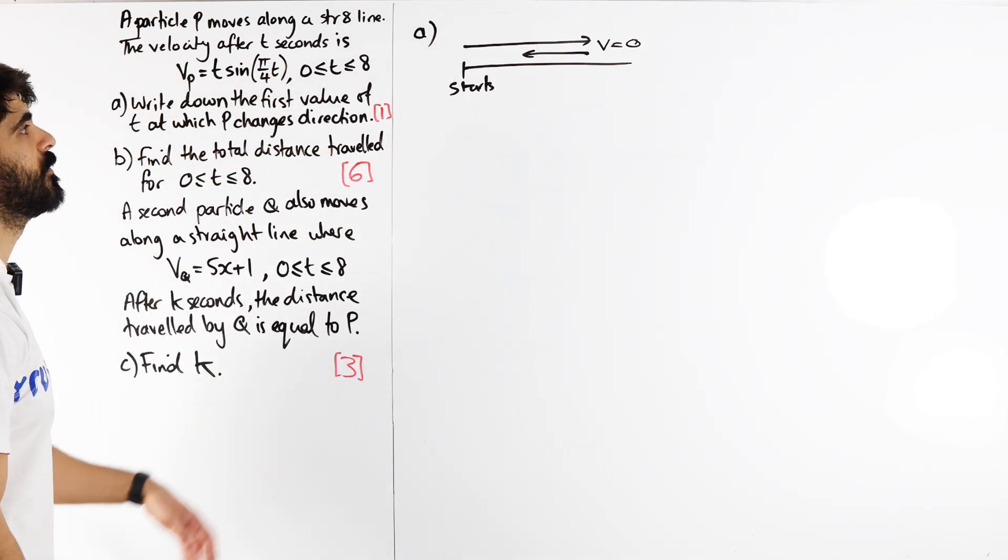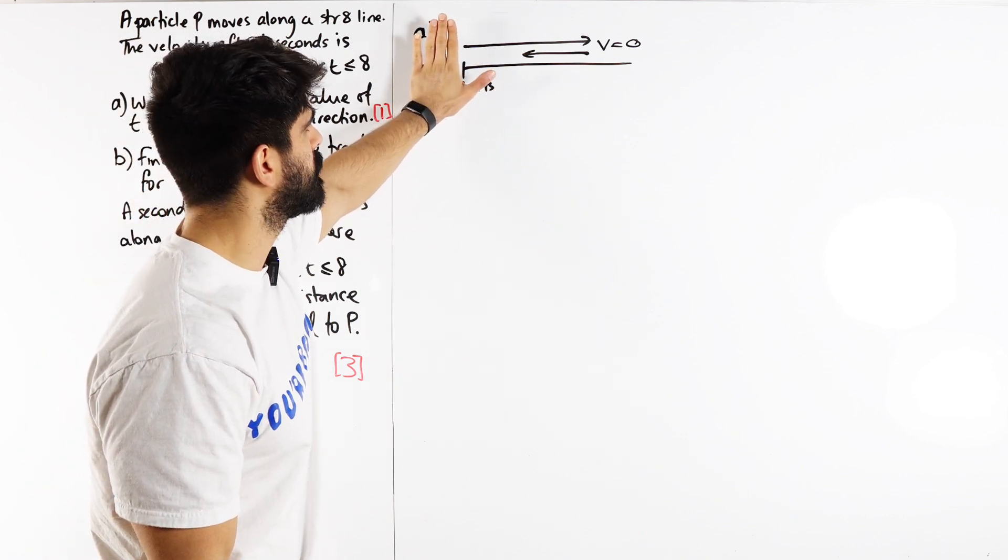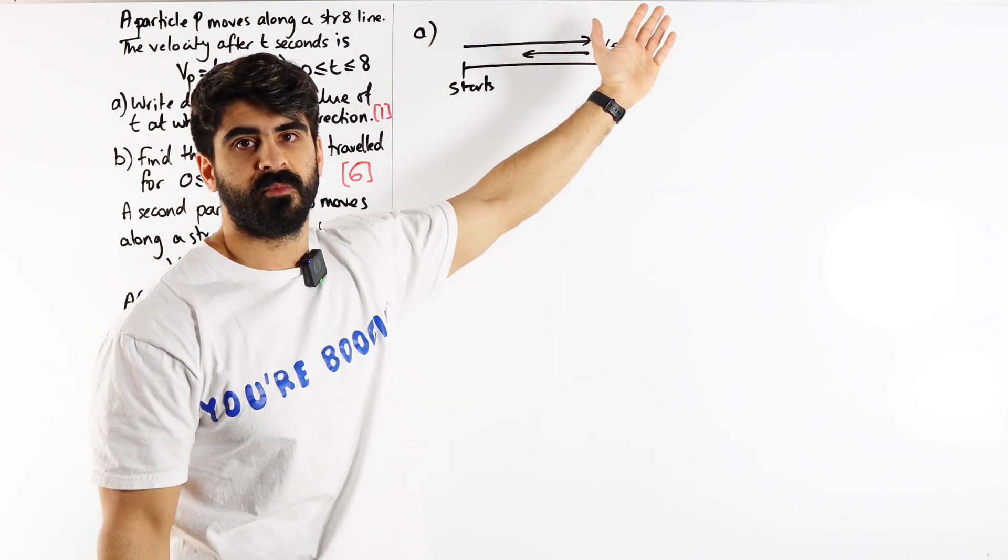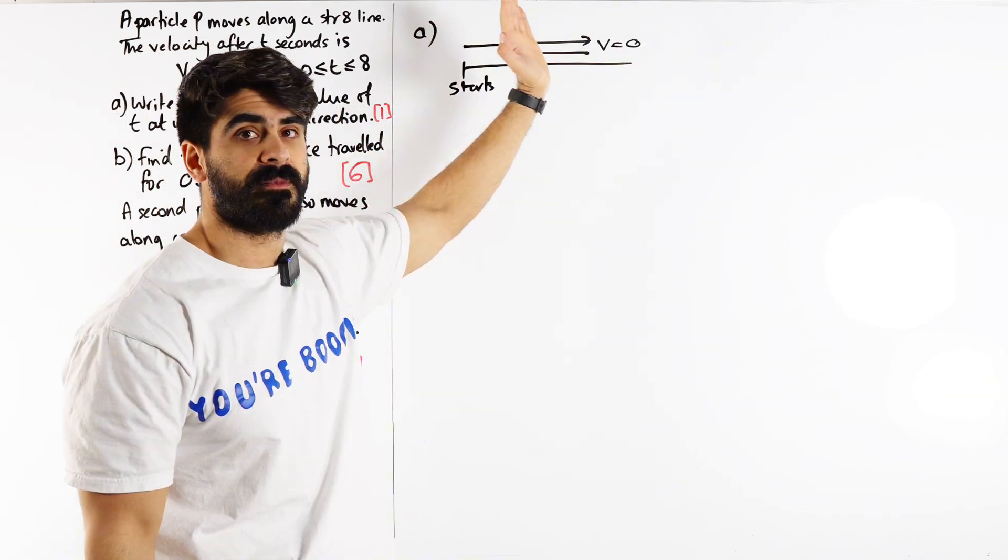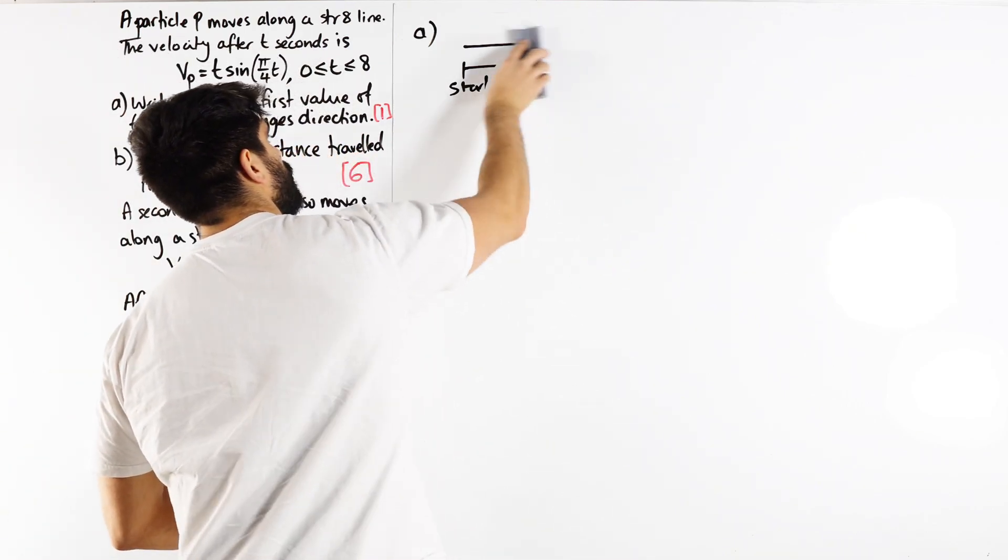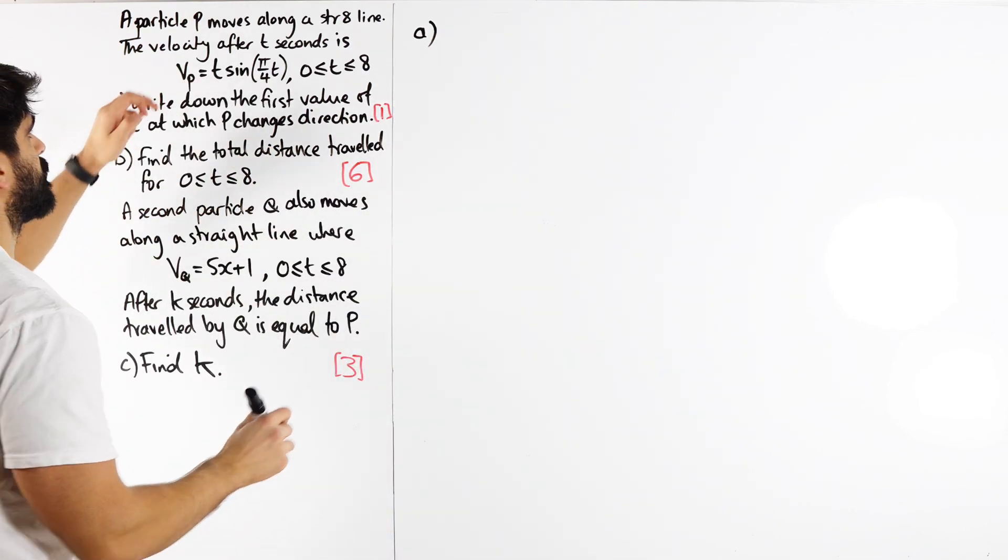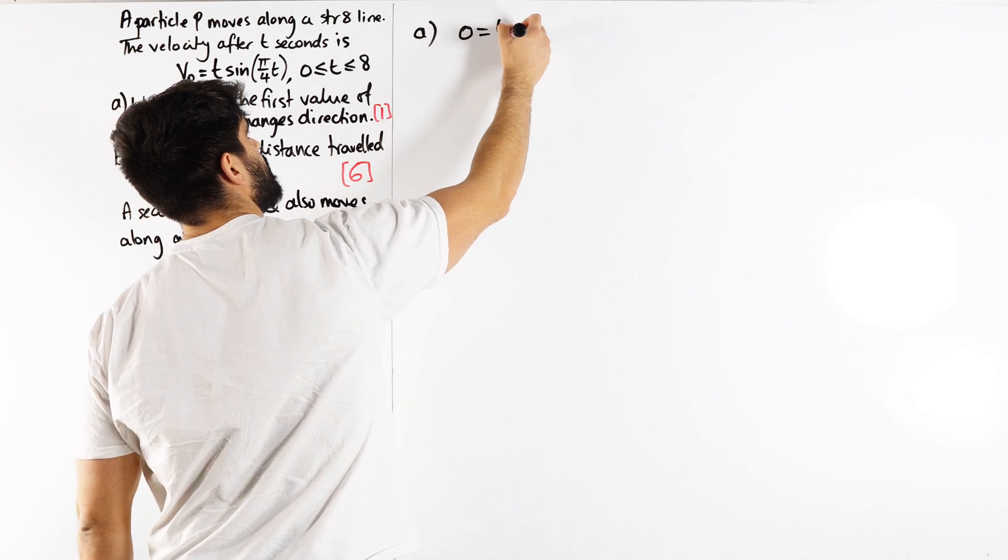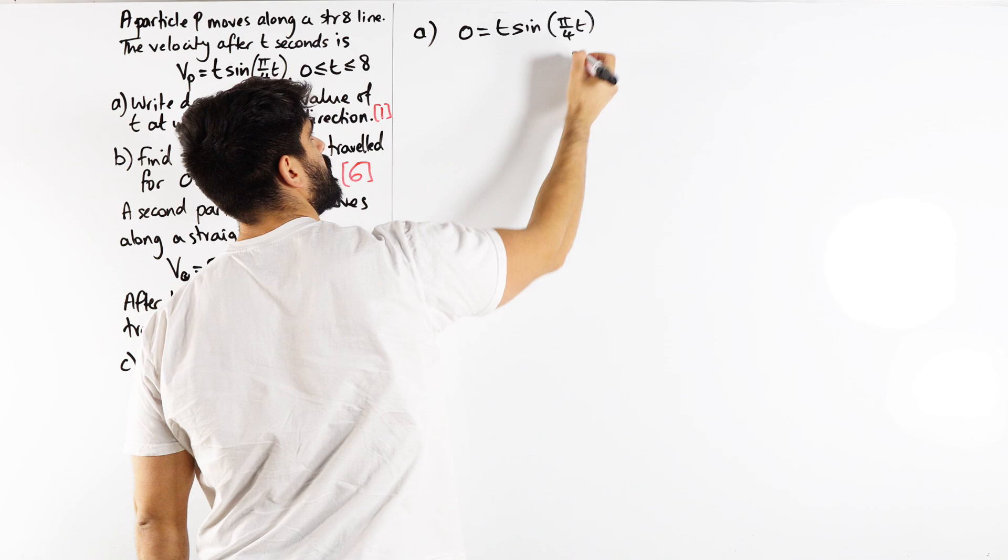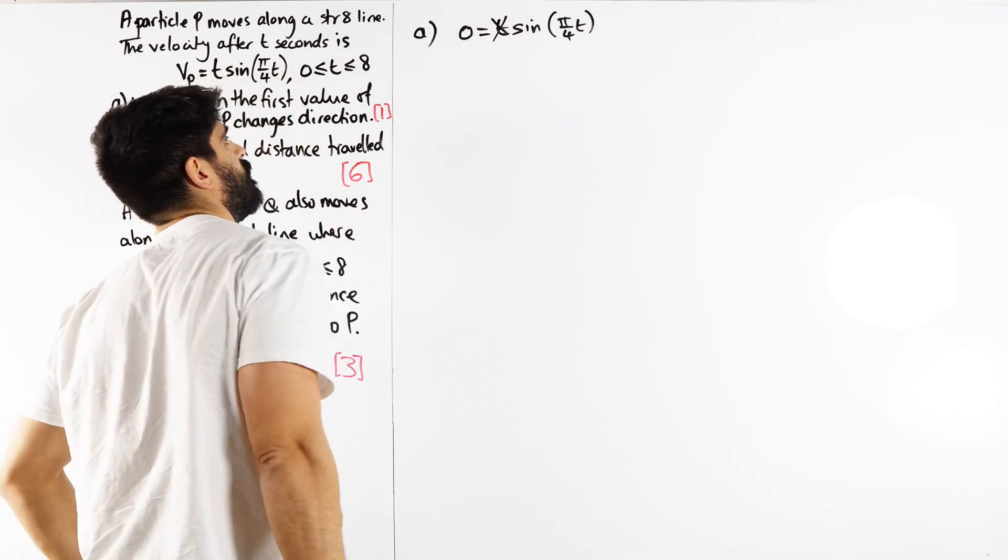The change of direction happens when the velocity eventually becomes 0. Obviously it's starting here, so it might start at rest, but we don't take that when v is 0 because it's already just moving in one direction from the start. We're looking for that first value where t is not 0.